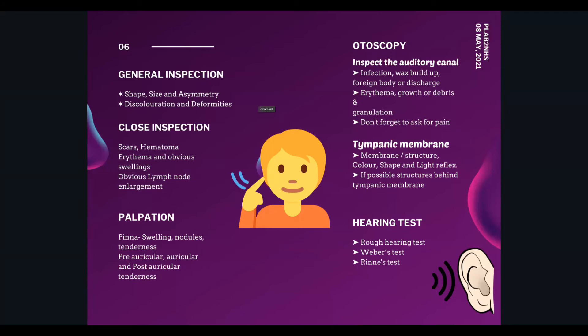To end the station, tell the examiner you would like to complete the examination by performing a Weber's and Rinne's test and a complete ENT examination, including the nose and throat, and palpation for cervical lymphadenopathy. You can pick up the tuning fork as you say this. Even if you forget, it is not a big deal, but mentioning it is a positive sign for the examiner.